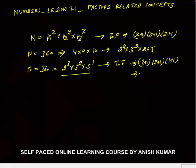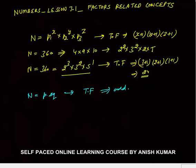Total factors of 360 = (3+1)(2+1)(1+1) = 4 × 3 × 2 = 24. Now the concept I want to discuss here is: if a number is a perfect square, then its total factors would always be odd. This is because in a perfect square, the power of every prime number is even — P1 is even, P2 is even, P3 is even.